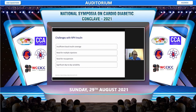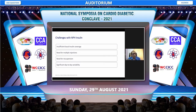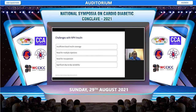Another important issue with NPH is its peak. When given in the morning as pre-mixed insulin, the peak that comes in the afternoon can cover the prandial requirement. However, when NPH is given at night, that peak can be unpleasant and cause early morning hypoglycemia. The day-to-day variability is also a major issue with NPH insulin.